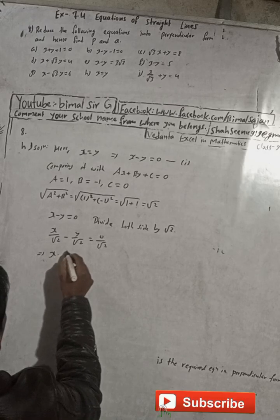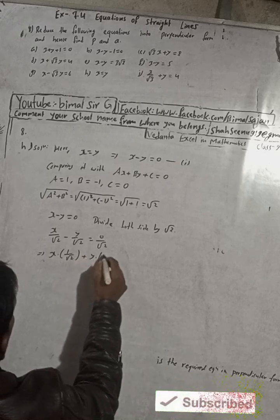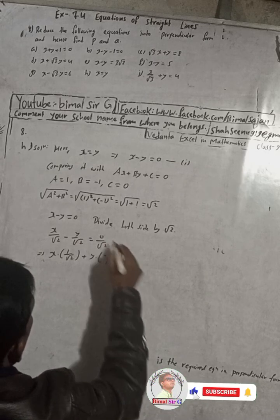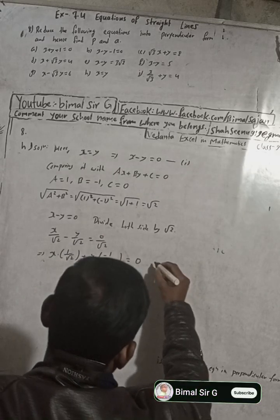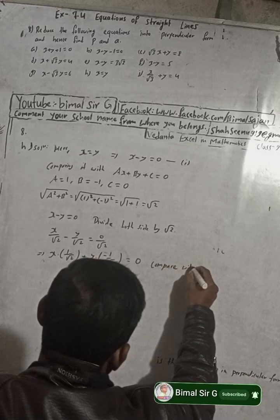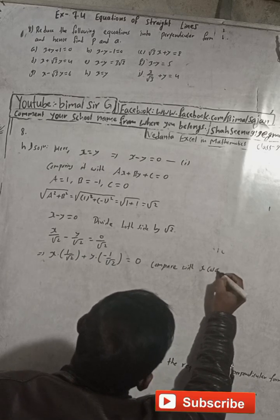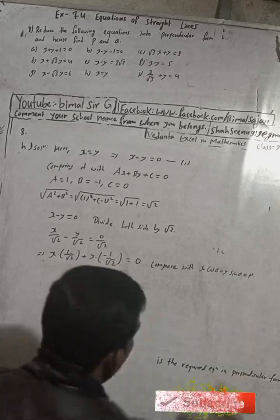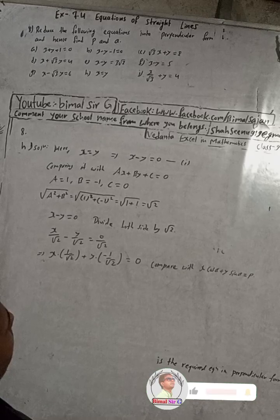So this can now be written in the special normal form: x·(1/√2) + y·(−1/√2) is equal to 0. Now compare this with x·cos α + y·sin α is equal to p.